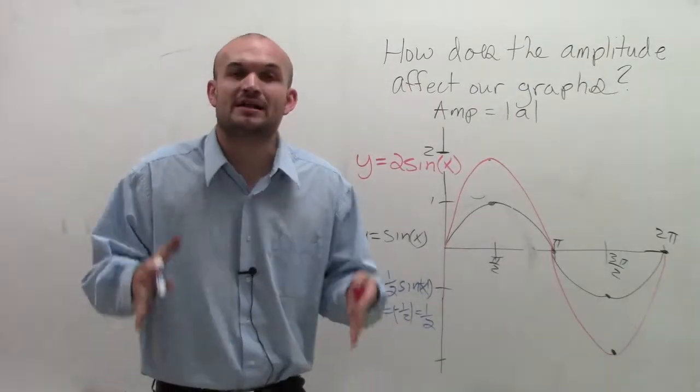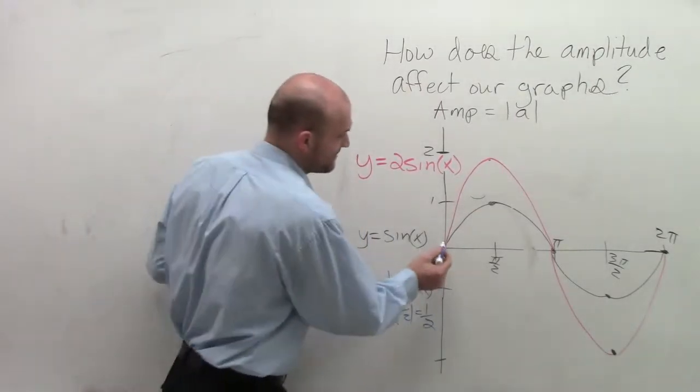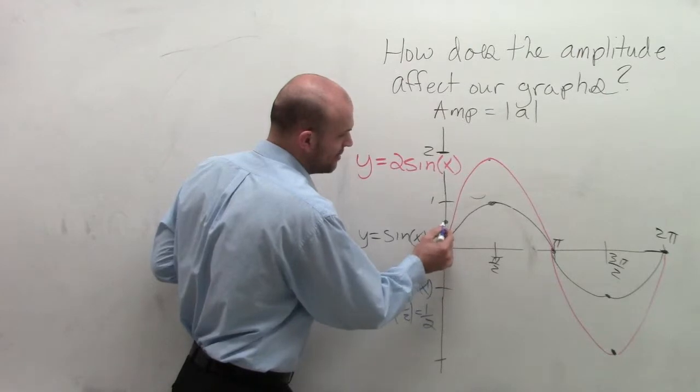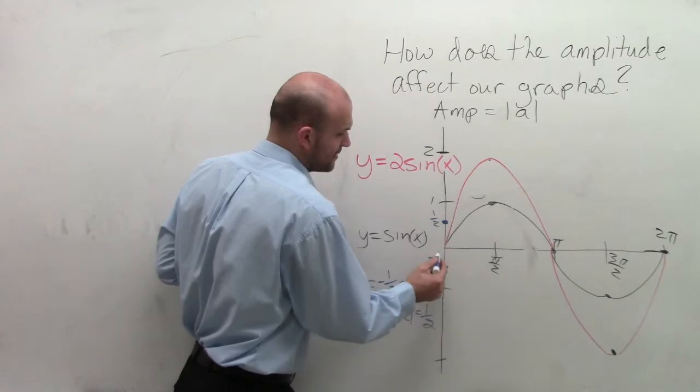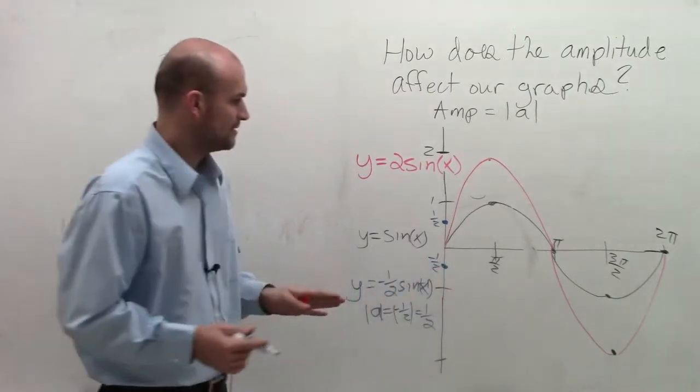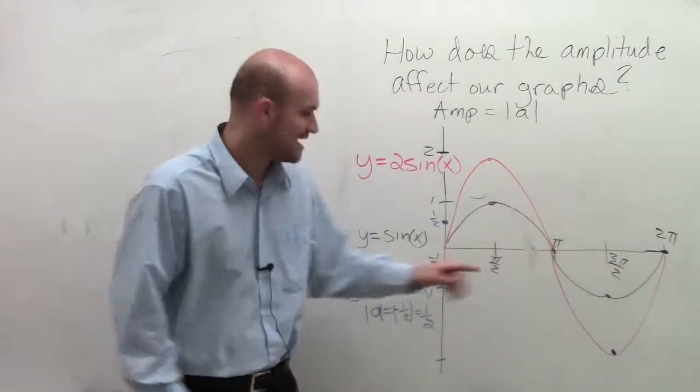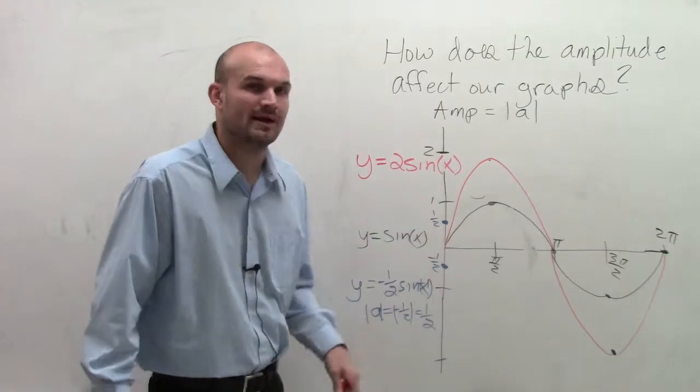So the negative is not going to affect my amplitude. That means my graph's maximum points are going to be at 1/2 and negative 1/2. Since I'm starting at 0, the maximum point is going to be at 1/2 and negative 1/2. So the graph is still going to only range with that half distance of 1/2.